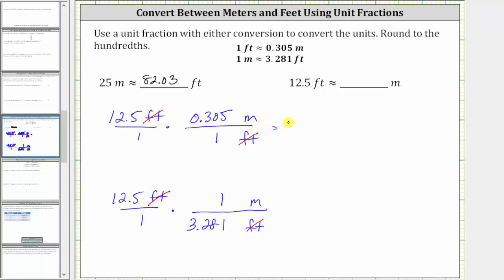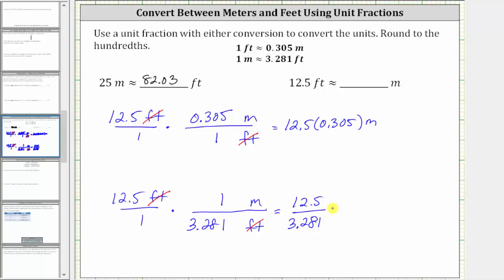Using the first conversion, since one foot is approximately 0.305 meters, one unit fraction could be 0.305 meters over one foot. Using the second conversion of one meter is approximately 3.281 feet, we form a unit fraction of one meter over 3.281 feet. So here we have 12.5 times 0.305 meters — notice the denominator is one — and for the second setup, when we multiply we have 12.5 divided by 3.281. The units are now meters.